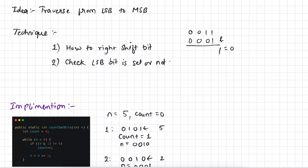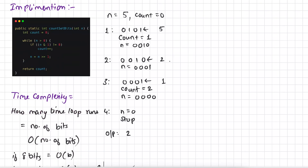Let's see the implementation of the brute force approach. We have a function countSetBits expecting an input n. We initialize the count variable to 0, then run a loop while n is greater than 0. Inside the loop, we check if the least significant bit is set by doing bitwise AND with 1, not equal to 0. If the LSB is set, we increment count. Then we shift the bit one position to the right. Finally, we return the count of set bits.